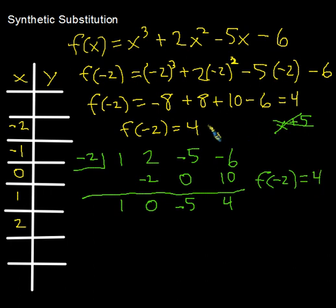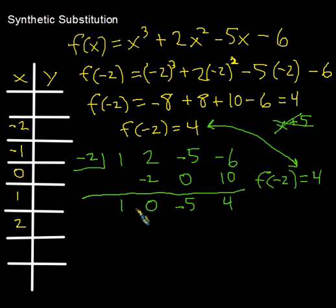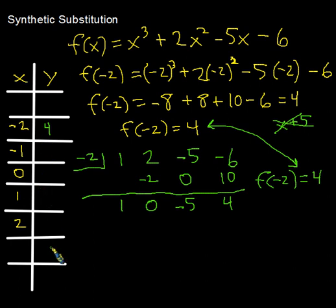That's the same result we got the old-fashioned way. It's a lot easier this way and far fewer mistakes — we're simply multiplying and adding. Let's record y equals 4 next to x equals negative 2, and try calculating a few more x values using synthetic substitution.